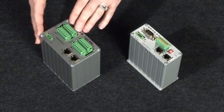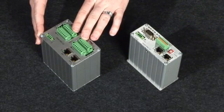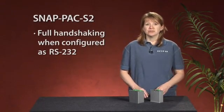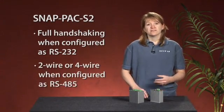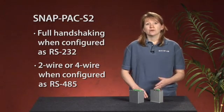The SnapPak S2 has four configurable serial ports. If configured as RS-232, the ports can have full handshaking. As RS-485, it can be two-wire or four-wire.